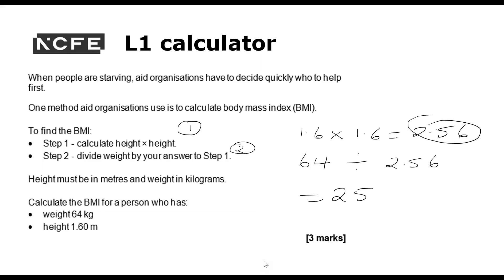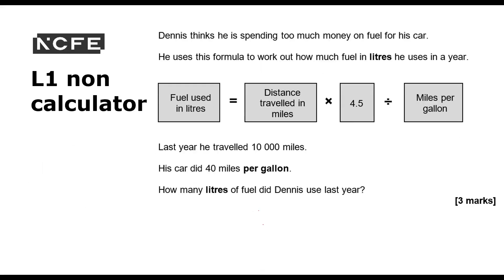We'll take a look at another, this one's a level one non-calculator, so we can't use a calculator here. Dennis thinks he's spending too much money on fuel for his car. He uses this formula, it's nicely written out in words here, so that's not too scary, to work out how much fuel in litres he uses in a year. We've got a conversion here. Last year he travelled 10,000 miles, so that's that part. So I'm going to actually draw a little arrow so that I know what I'm doing there.